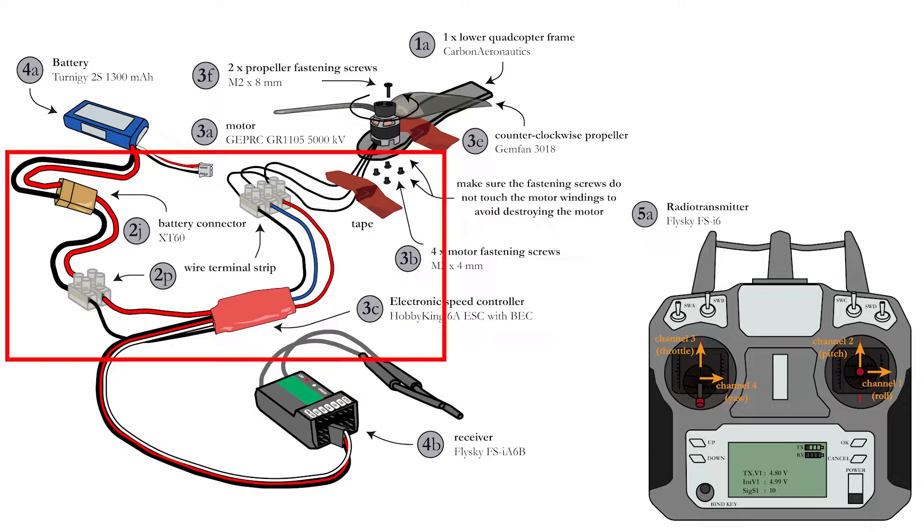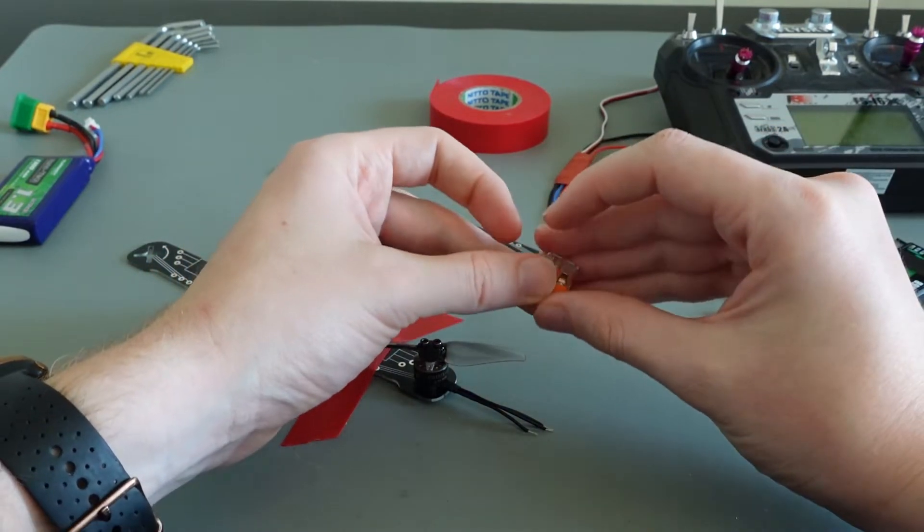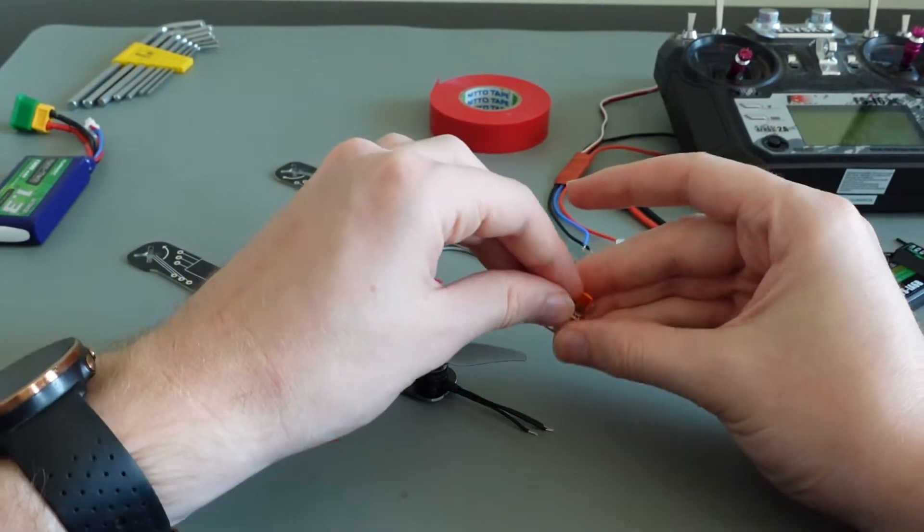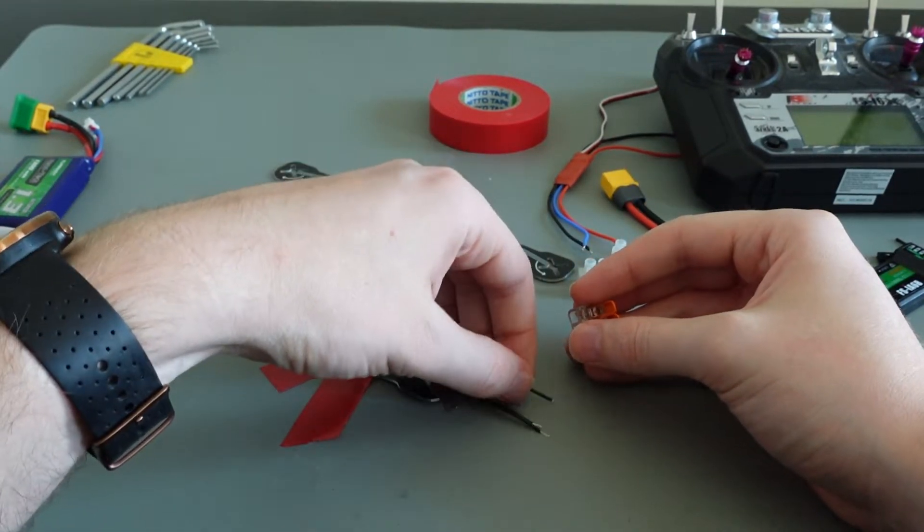Now let's continue by connecting the motor via the ESC to the battery connector. You can use wire terminal strips for the temporary connections, but it's easier to connect the wires with wire connectors such as the WAGO 221.